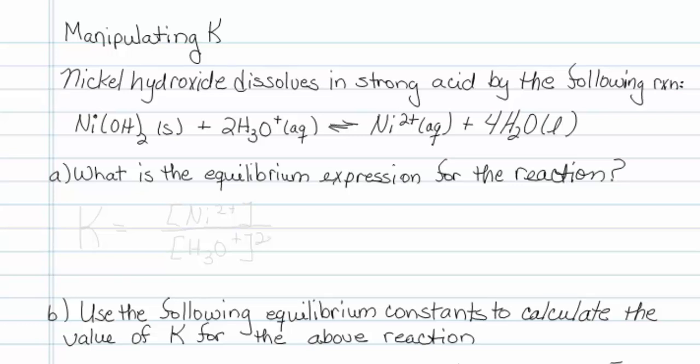This is how to manipulate K when you're adding reactions. Nickel hydroxide dissolves in strong acid by the following reaction. We've got nickel hydroxide solid plus two hydroniums aqueous in equilibrium with nickel ion aqueous and four waters.